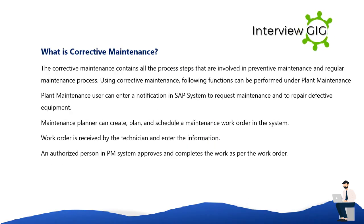Corrective maintenance contains all the process steps involved in preventive and regular maintenance. Under corrective maintenance, a plant maintenance user can enter a notification in the SAP system to request maintenance and to repair defective equipment. The maintenance planner creates and schedules a maintenance work order, which is received by the technician. An authorized person in PM then approves and completes the work as per the work order.